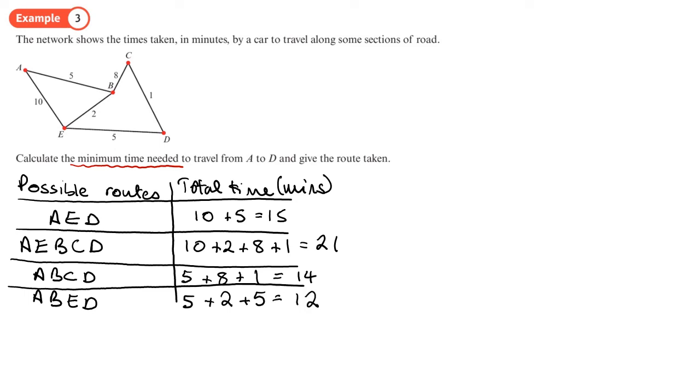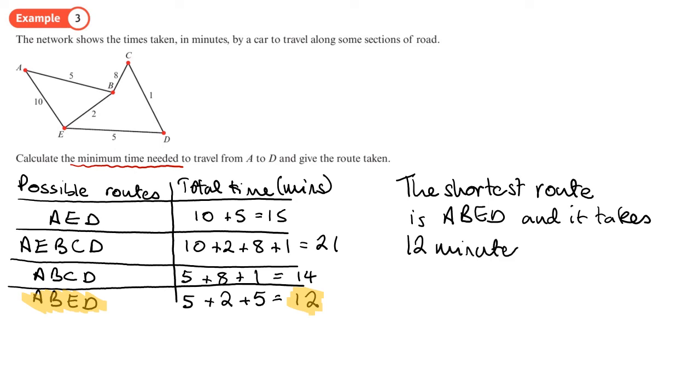Now I can't see any other routes to take. This one then is the shortest, A, B, E, D. Now it may not look the shortest, but in terms of minutes, it's the shortest. So the shortest route in terms of time is A, B, E, D, and it takes 12 minutes. So we did that by inspection.